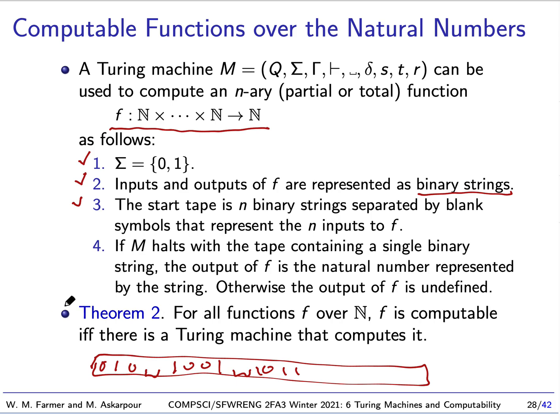So, it turns out, and this is theorem 2, given any function, any function over the natural numbers like this. If that function is computable, that function will be computable if and only if there's a Turing machine that computes it. And remember what a function means to be computable. It means there's an algorithm to compute it, or another way of saying it, there's an effective method for computing. So, we can use Turing machines as a model of computation for computable functions.